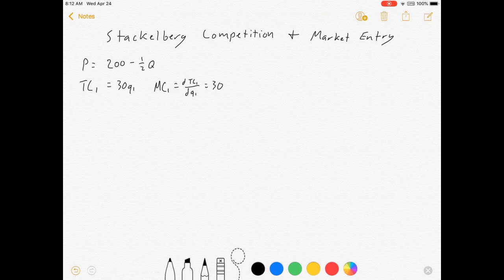So here's the way this game works. We have an incumbent firm who faces this inverse demand curve, price equals 200 minus 1.5Q. I just gave him a constant marginal cost of 30 and no fixed costs. And currently this firm is operating as a monopolist.